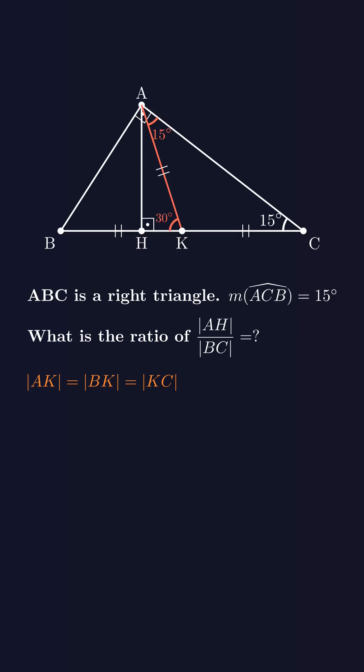So, if the side opposite the 30 degrees angle, which is AH, is X, then the hypotenuse is 2X. That means BC becomes 4X. We're asked for the ratio of AH to BC, which is X over 4X, and that simplifies to 1 over 4.